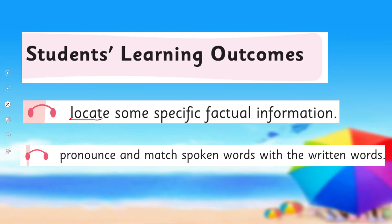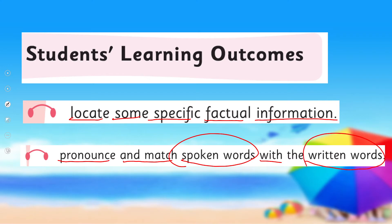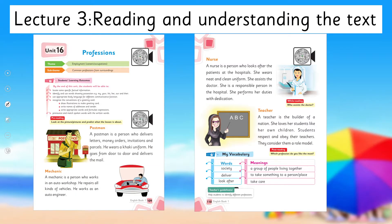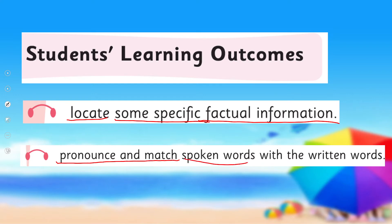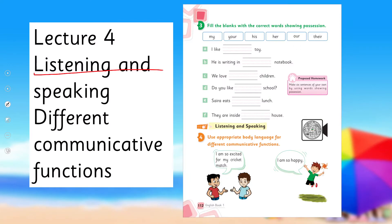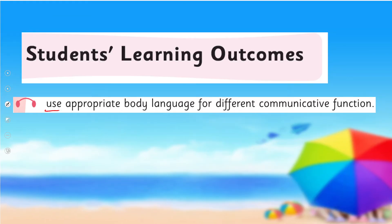Lecture 2 will cover the SLO to locate some specific factual information, pronounce and match spoken words with written words. Lecture 3 will continue and complete reading and understanding of the text as well as comprehension of this unit, covering the SLOs to locate specific factual information and pronounce and match spoken words with written words. Lecture 4, under listening and speaking, covers appropriate body language for different communicative functions.